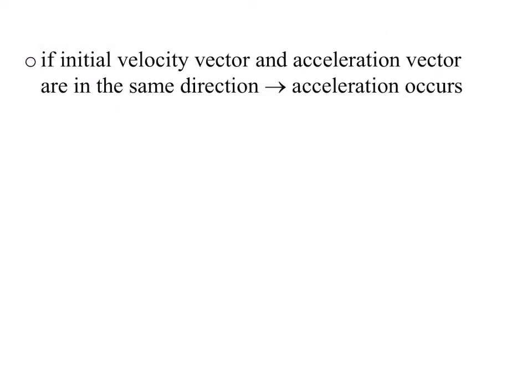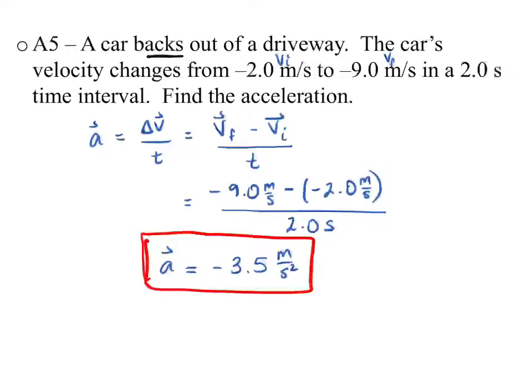One last thing: a lot of people look at negative acceleration and say this must be slowing down — that's untrue. We know it's speeding up; it's going from 2 to 9 meters per second. It's just speeding up in the backwards direction. This negative does not tell you whether something is speeding up or slowing down. It's not as easy as looking at the negative or positive sign.